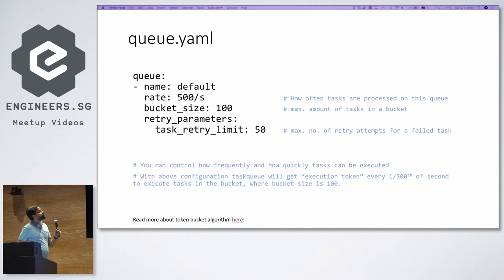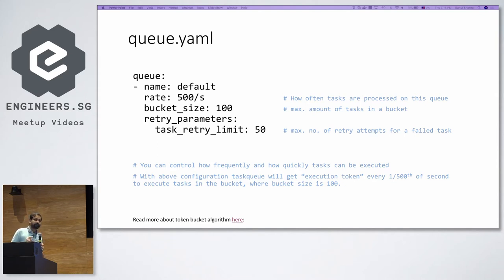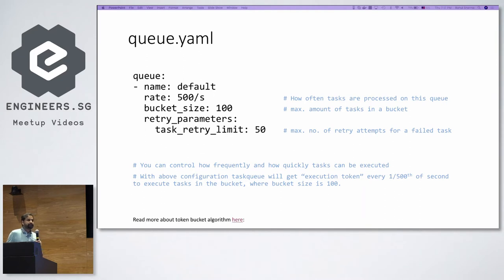I'll spend more time on task queues because it's quite important and it took me a while to understand how to leverage it. Every Google App Engine platform has one default push queue. I'll use that and specify a rate of 500 per second, a bucket size of 100, and retry parameters. In the perfect world every task works, but you need safety nets — a retry limit of 50 means if a task fails, it will keep retrying, and you can configure that however you want.